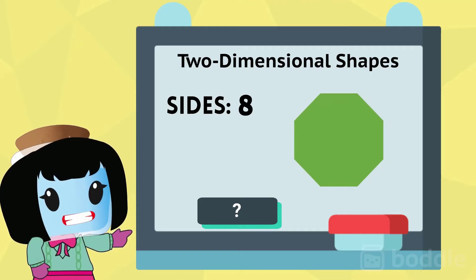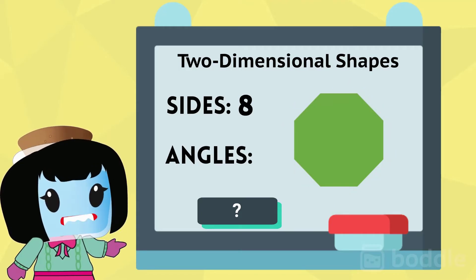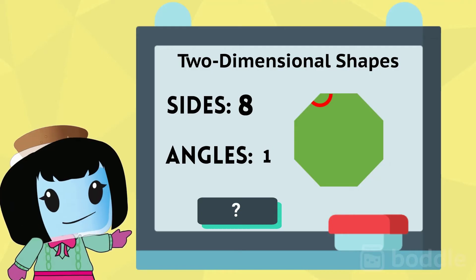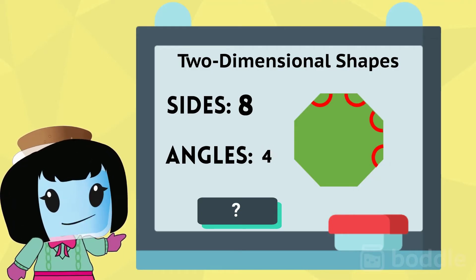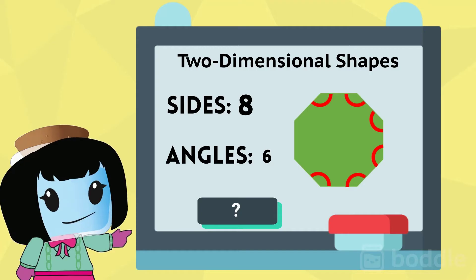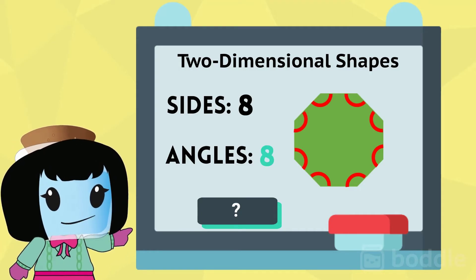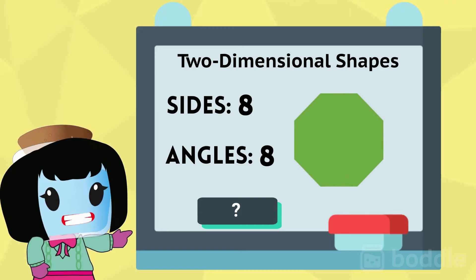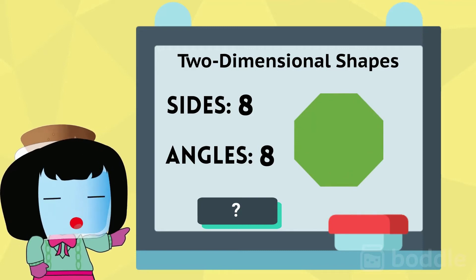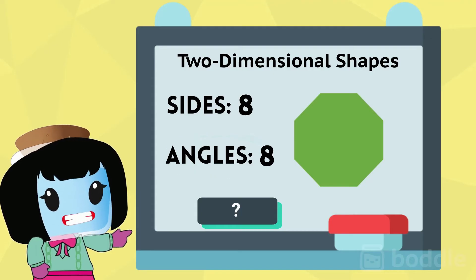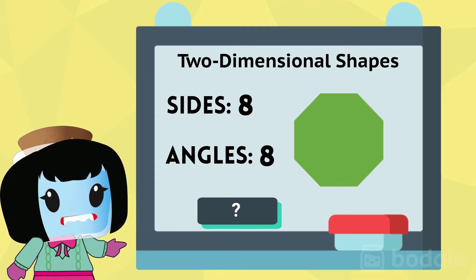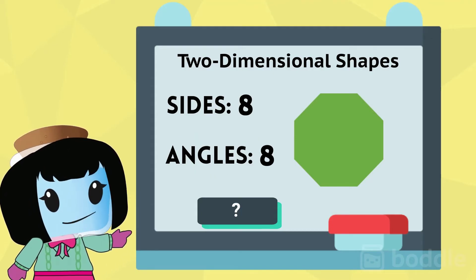How many angles does it have? One, two, three, four, five, six, seven, eight. It has eight angles. We would describe this shape as having eight sides and eight angles. Do you know what it's called? It is an octagon.